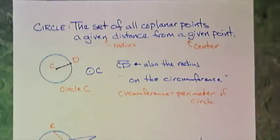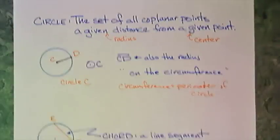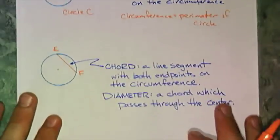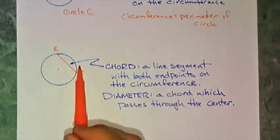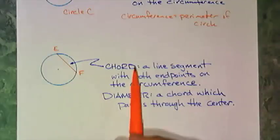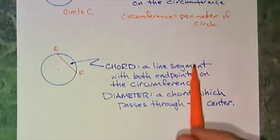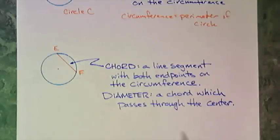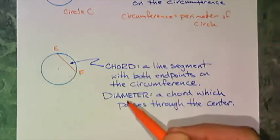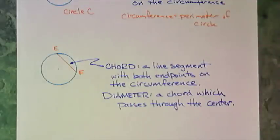All right. Now I can move into some other parts. I can make a line segment that connects two points on the circumference. That's called a chord, a line segment with two points on the circle. A diameter is a chord which passes through the center. So a diameter is a special chord.